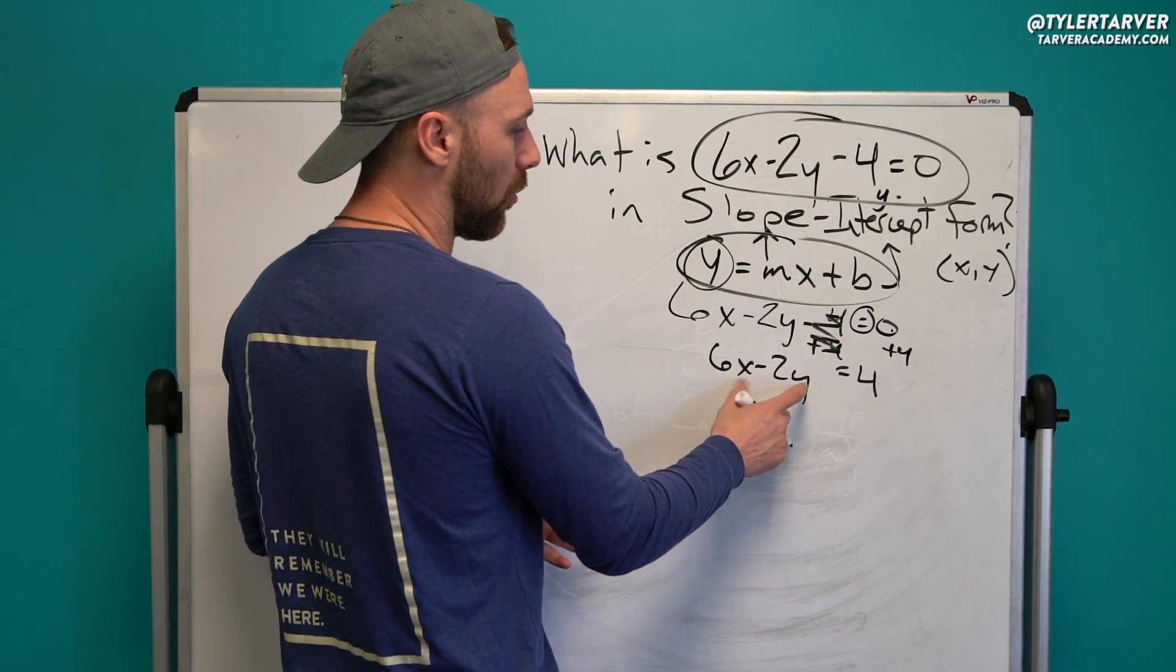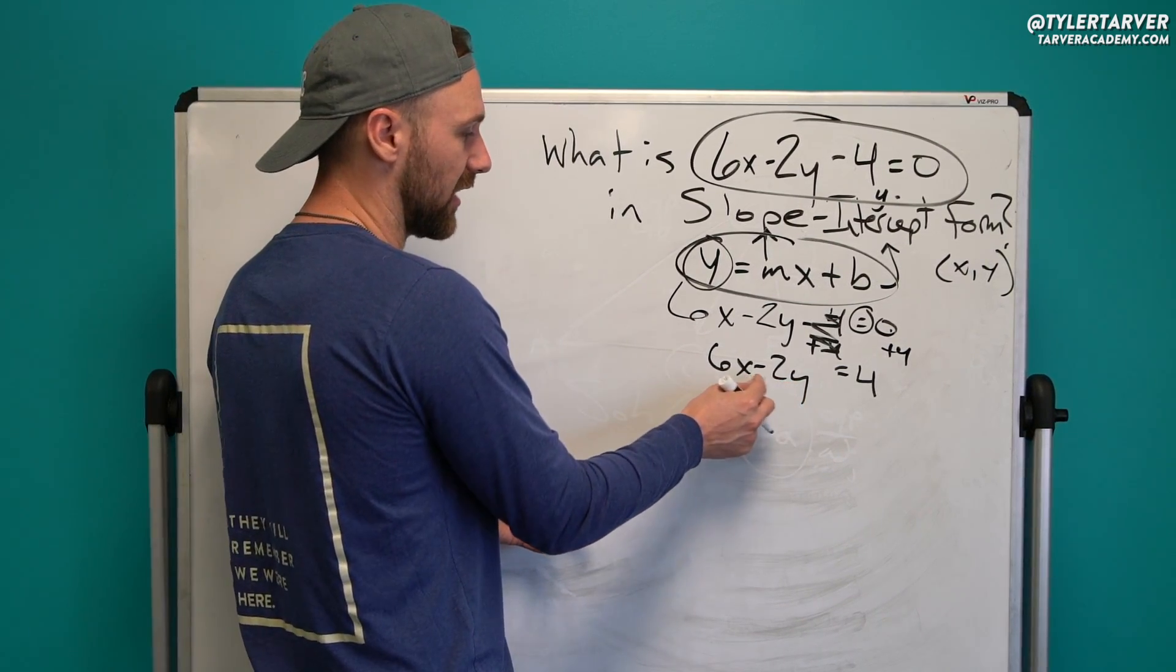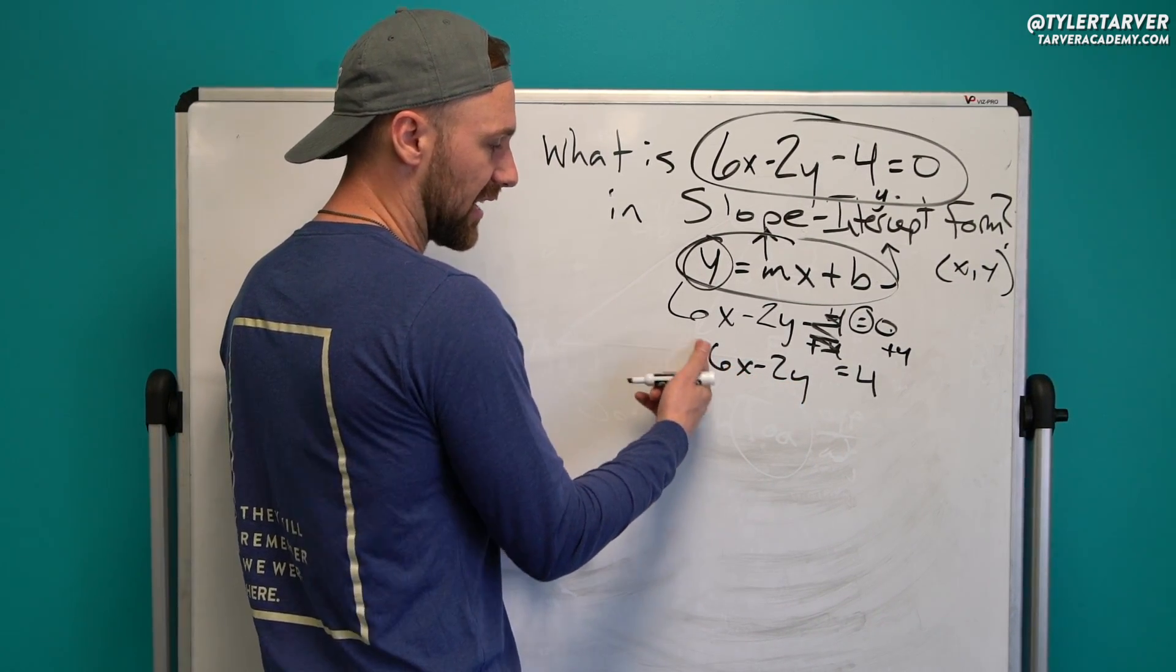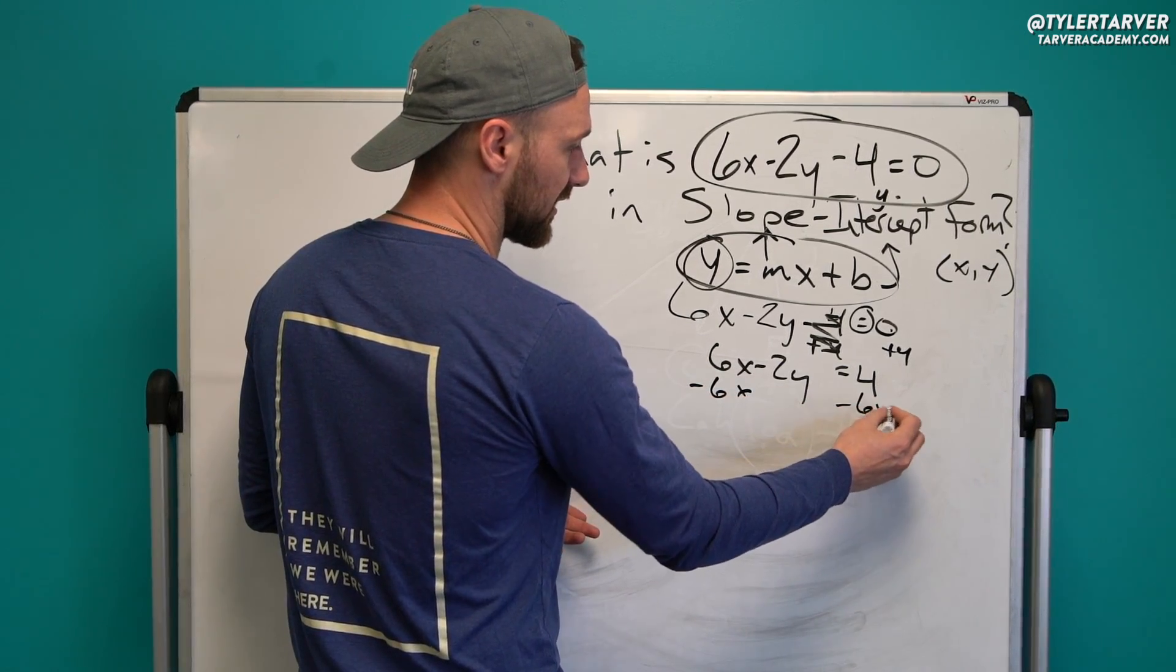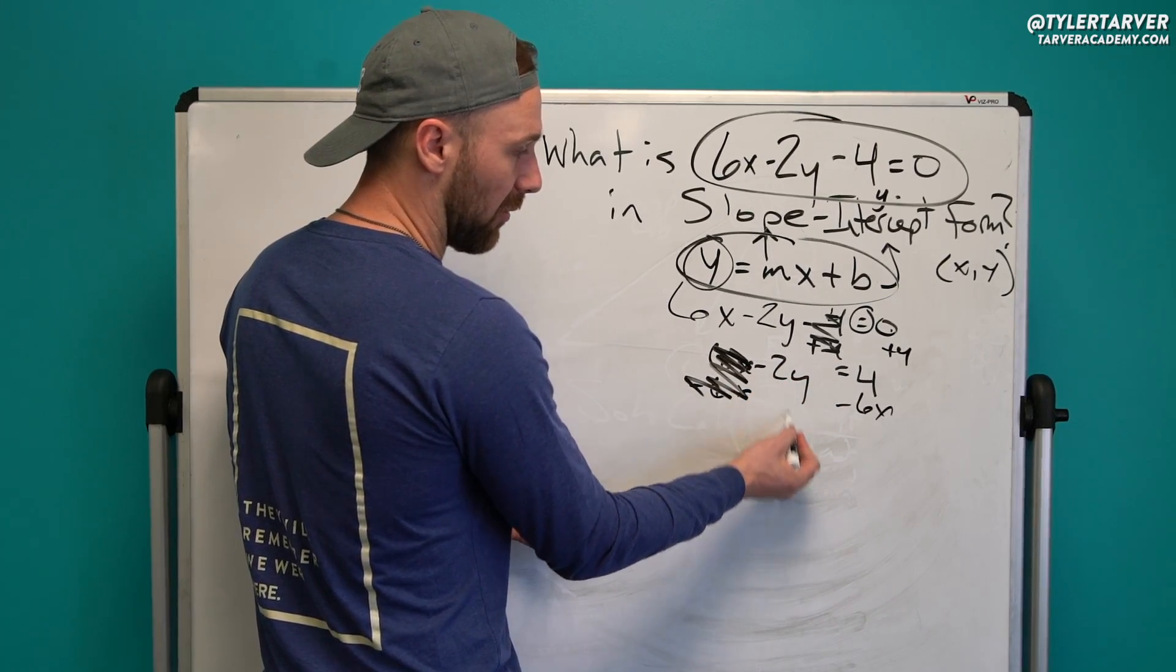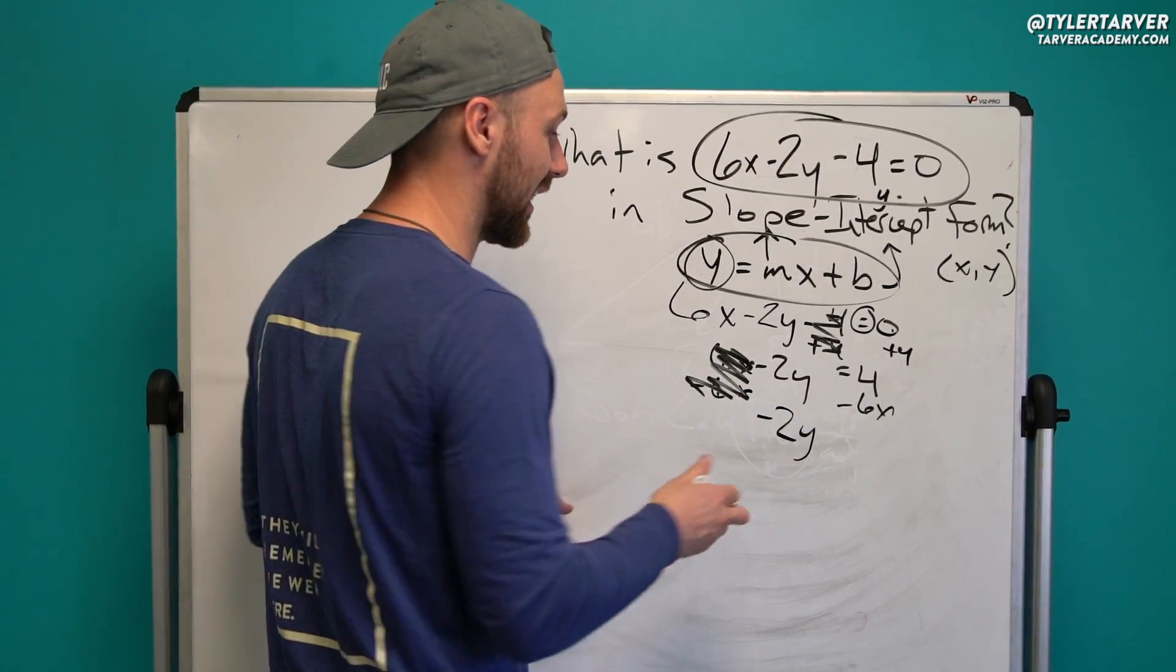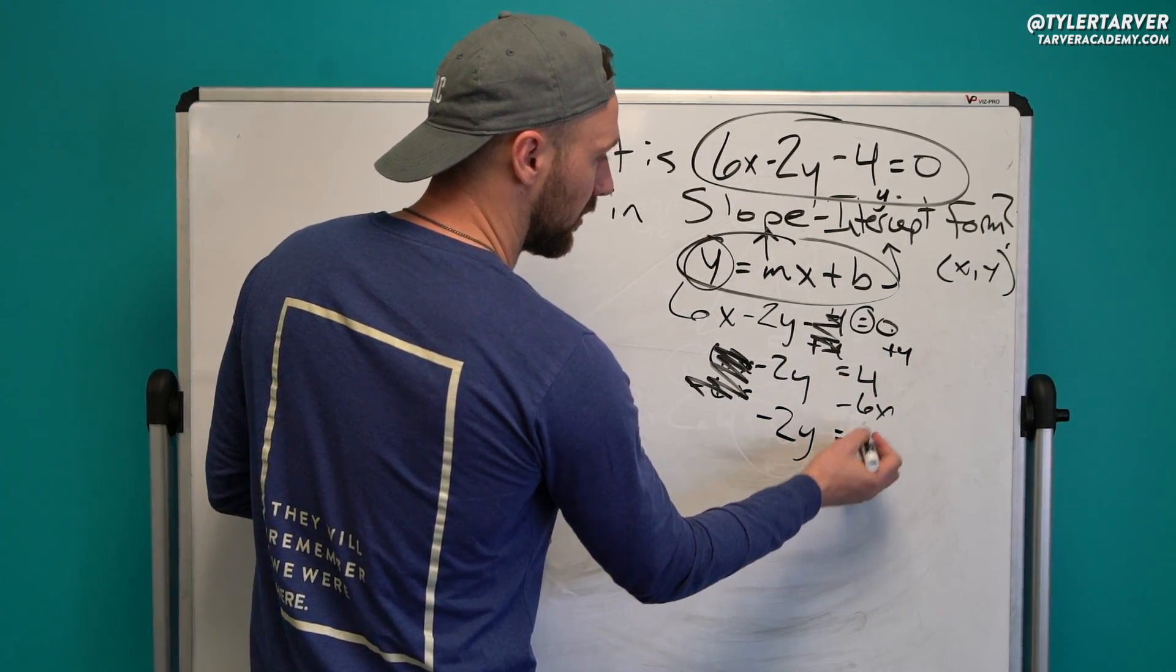All right, now we're still going to get y by itself. I'm going to get rid of the stuff that's right next to it last. So I need to get rid of that 6x. It's a positive 6x, so I can just subtract 6x from both sides. That's 6x minus 6x—it's gone. Now, bringing it down, don't forget your negative. A lot of people will forget that negative and it'll mess them up. Bring down your equals sign.